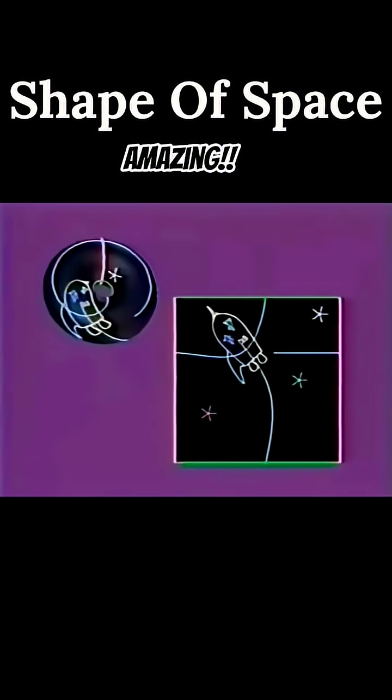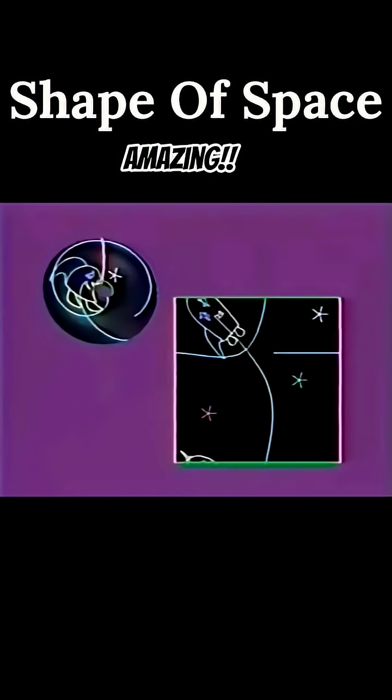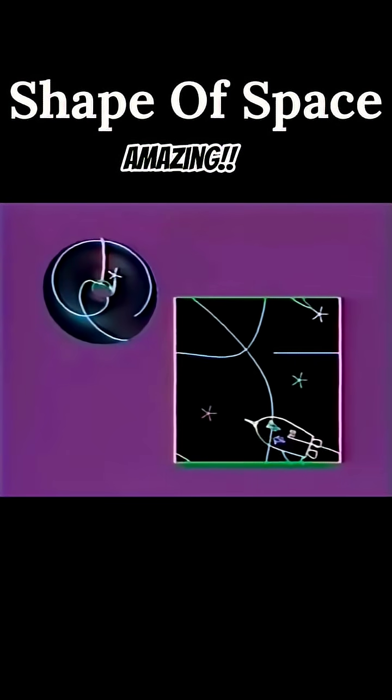Anything leaving one glued edge returns at the other. The way we glue them determines the shape of the space.